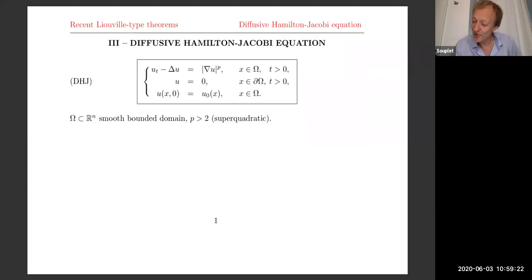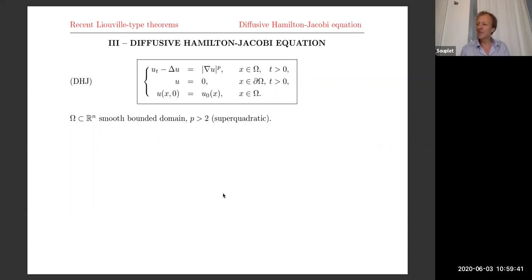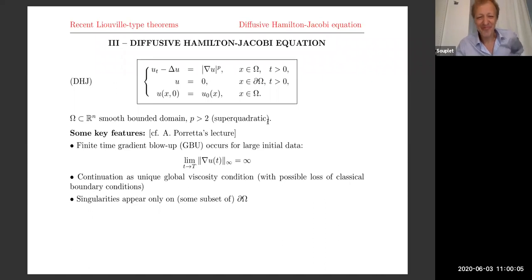Now it's time to go to the third topic: the diffusive Hamilton-Jacobi equation. I'm lucky because Alessio Porretta gave a very nice and complete talk yesterday on this equation, so I will focus on some more specific points related to Liouville type theorems. We consider the super-quadratic or so-called supernatural growth. Some key features: first, you have finite time blow-up in the sense of gradient blow-up (GBU) — the solution stays bounded but the gradient goes to infinity. Second, you have a unique continuation as a global viscosity solution, which may lose boundary conditions. Third, singularities appear only on the boundary.